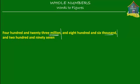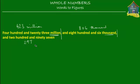What's 423 million in numerals? Well, 423 is 423, and since it's million we write million. Next is 806,000 — 806 is 806 and since it's followed by thousand we write thousand. Then we have 297, which is simply 297. So: 423 million, 806,000, and 297.